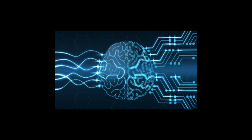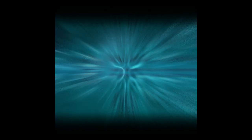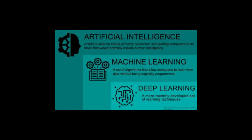In the field of computer science, artificial intelligence — sometimes called machine intelligence — is intelligence demonstrated by machines, in contrast to the natural intelligence displayed by humans or other animals.